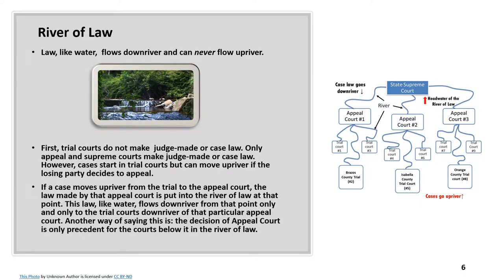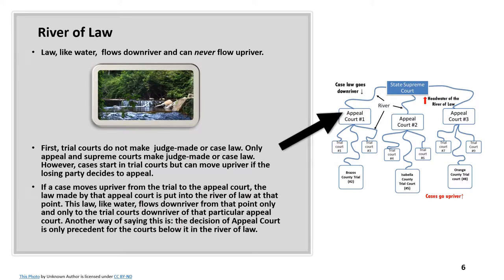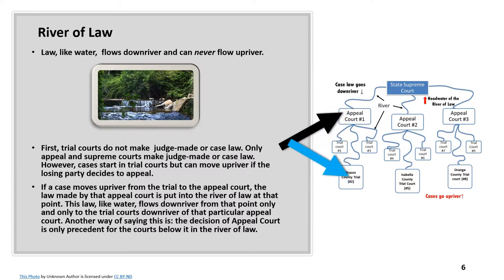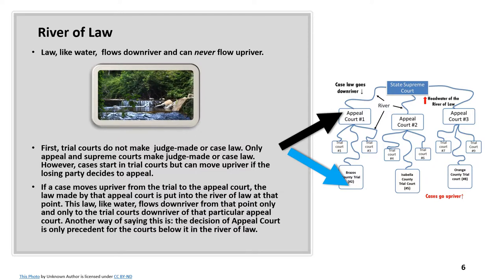Law, like water, flows down river and can never flow up river. Trial courts do not make judge-made or case law — only appeal and Supreme courts make judge-made or case law. Cases start in trial courts but can move up river if the losing party decides to appeal. If a case moves up river from the trial to the appeal court, the law made by that appeal court is put into the river of law at that point. This law, like water, flows down river from that point only, and only to the trial courts down river of that particular appeal court. The decision of an appeal court is only precedent for the courts below it in the river of law.